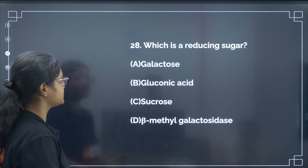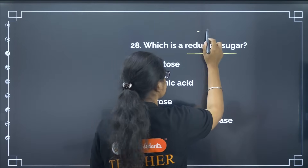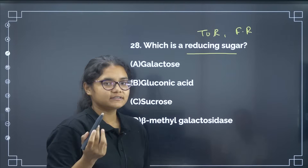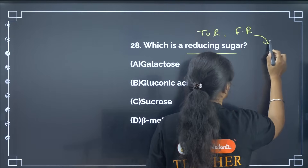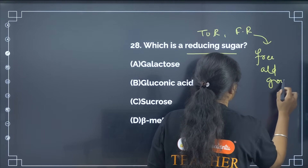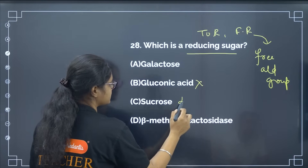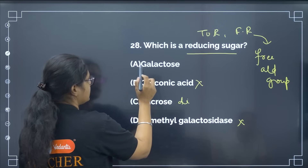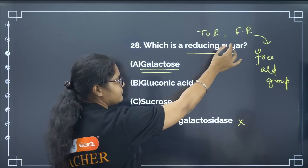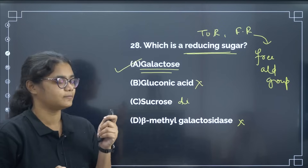Which is the reducing sugar? The condition for a reducing sugar is that it reduces Tollens' reagent and Fehling's reagent by having a free aldehyde group. Generally all monosaccharides can reduce these reagents. Sucrose is a disaccharide, so it cannot. Galactose is a monosaccharide with a free aldehyde group, so it can reduce Tollens' and Fehling's reagents and is a reducing sugar. The correct answer is option number A.